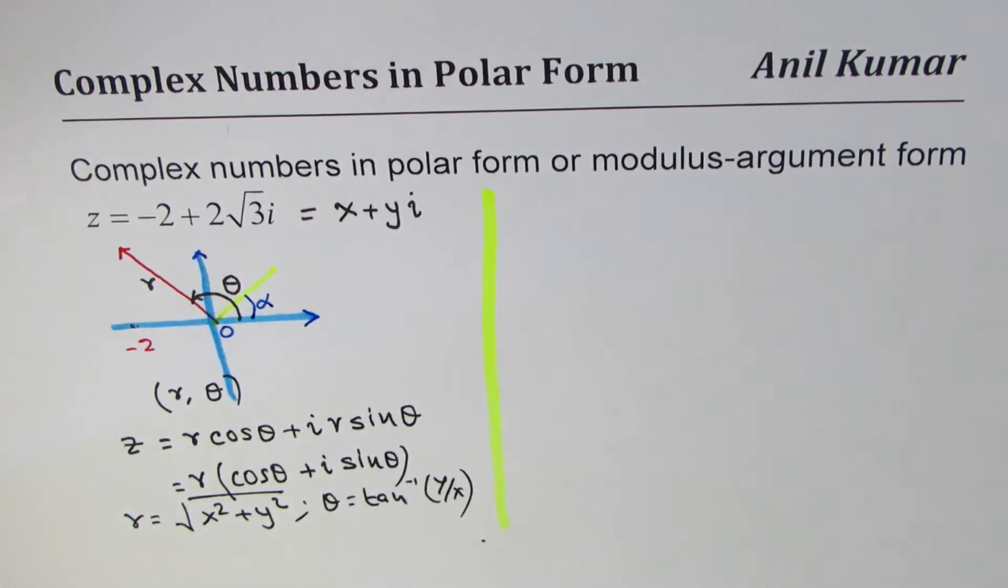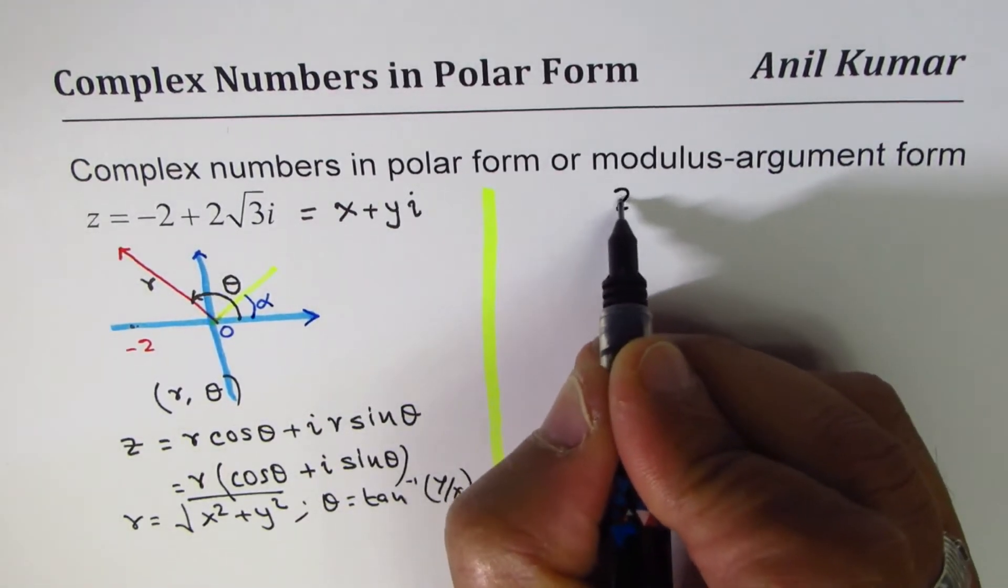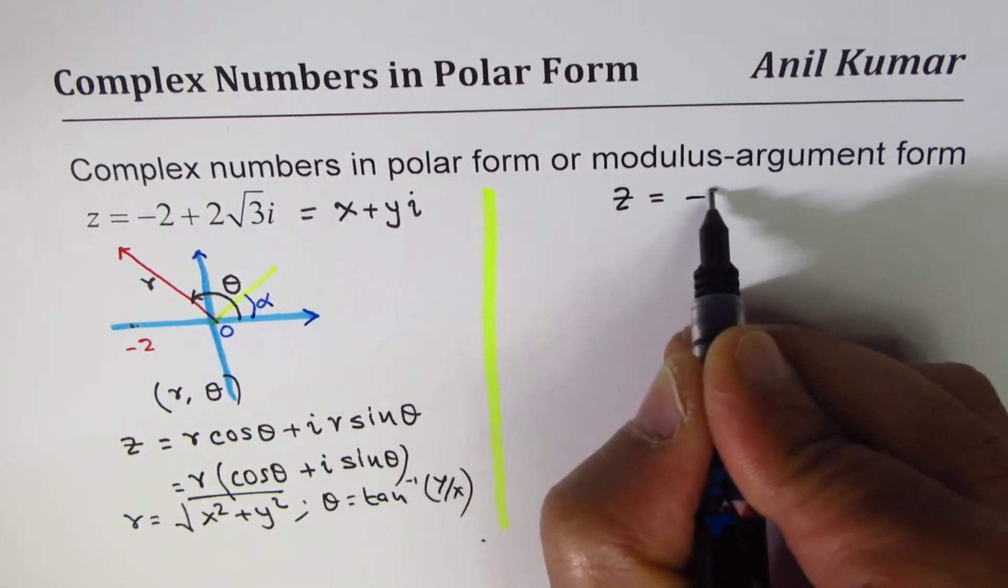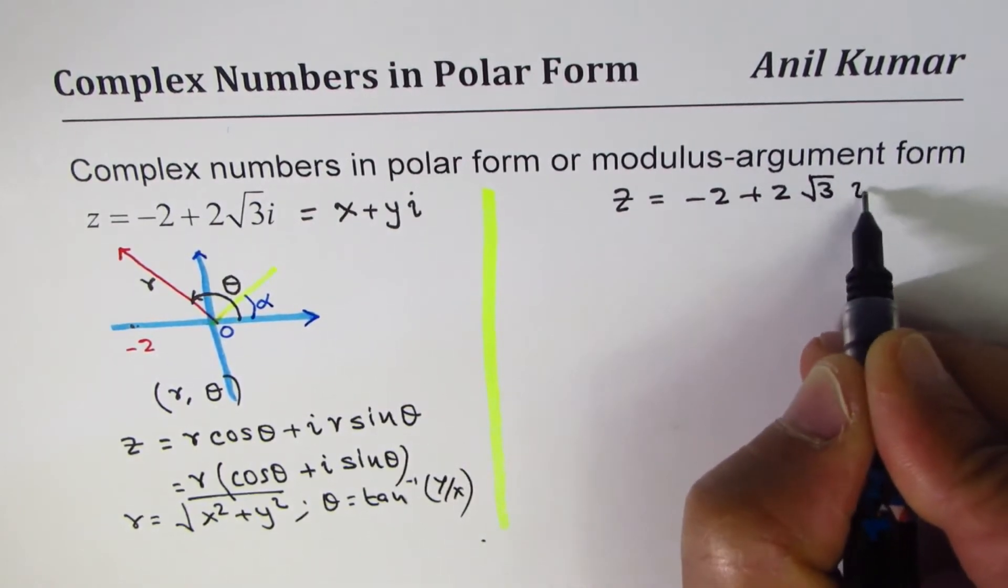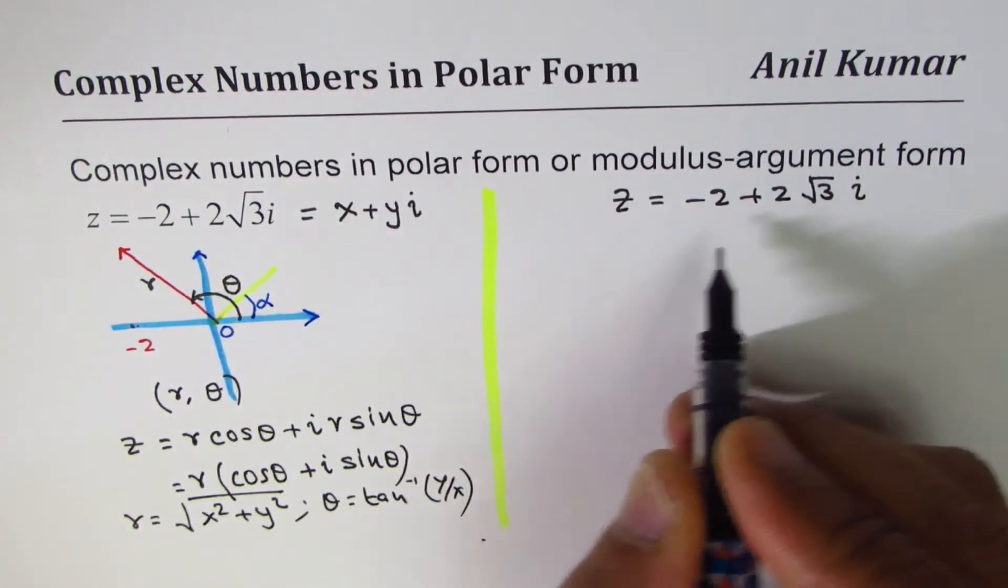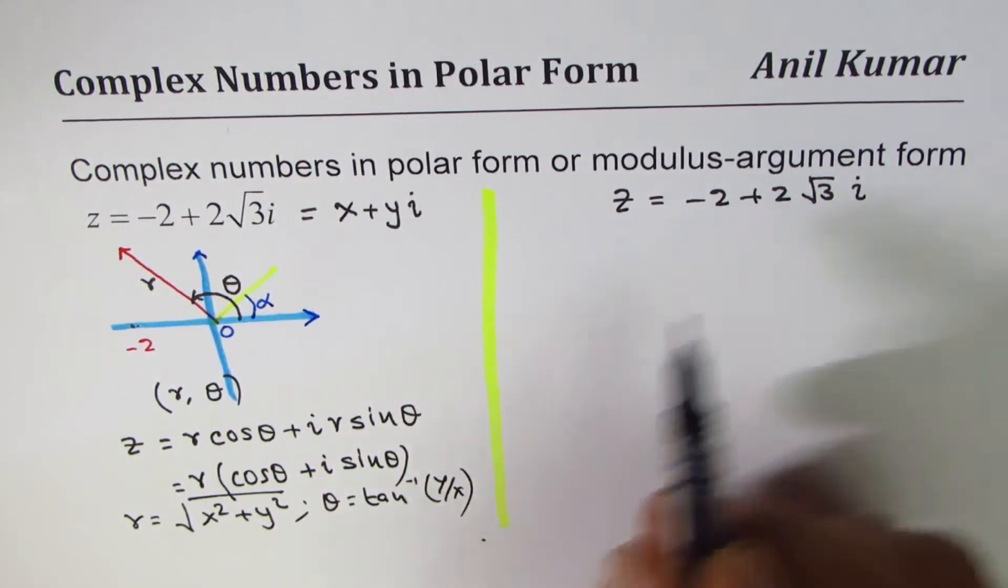So let's begin. We have the complex number z equals minus 2 plus 2 square root 3 i. As you can see here, the x value corresponding is minus 2, y is 2 square root 3.